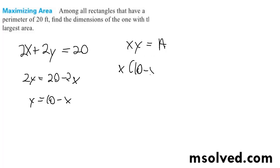So we get x times (10 minus x) equals A, then we get 10x minus x² equals A. Using the vertex formula...